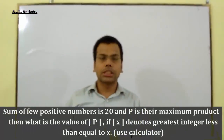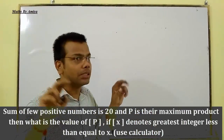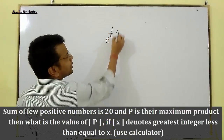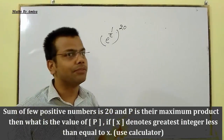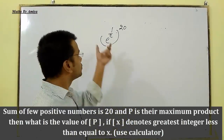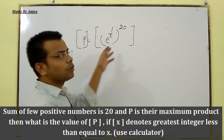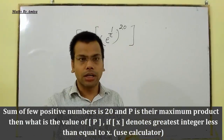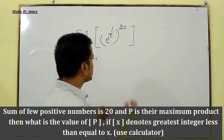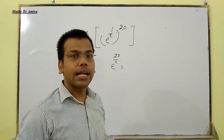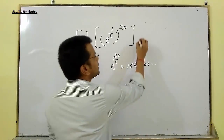Now we solve our question. The sum of few positive numbers is 20 and we need to find the maximum product's integral value. Since the summation of few positive numbers (not integers) is 20, the maximum product P equals e raised to power (1/e) raised to power 20, which is e raised to power 20/e. We use a calculator: e raised to power 20/e equals approximately 1568.05. Since we need the integral value, the answer is 1568.